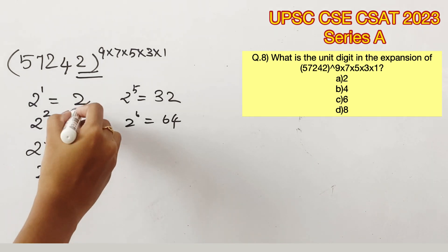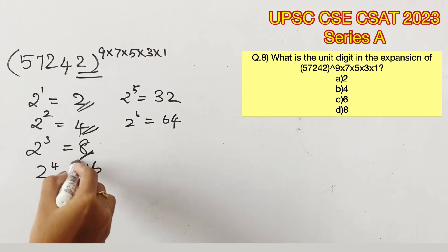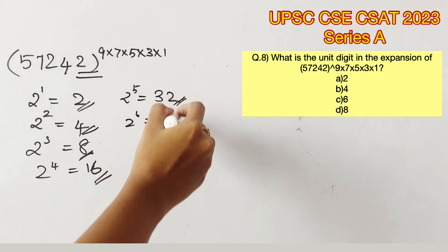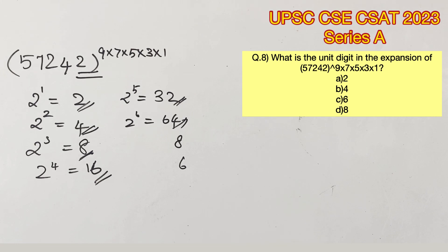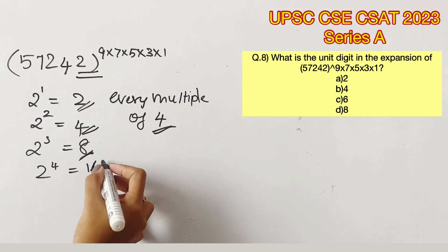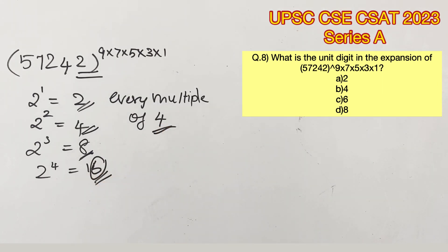So now we can conclude that 2 raised to powers will follow a pattern of 2, 4, 8, 6 in the unit's place, which means that 2 raised to any multiple of 4 would provide a number ending with the unit digit as 6.